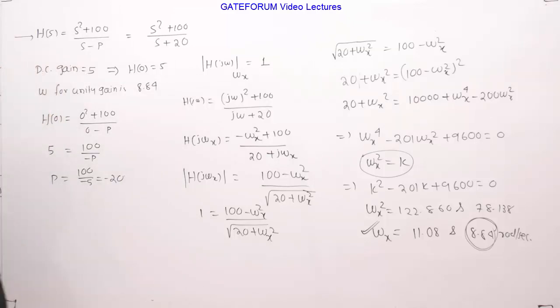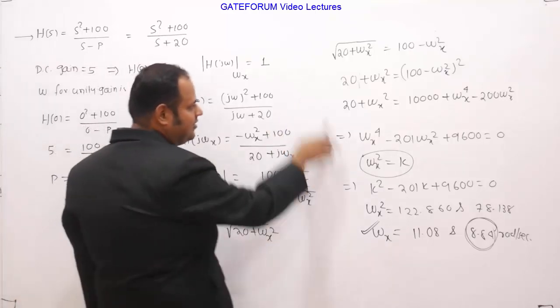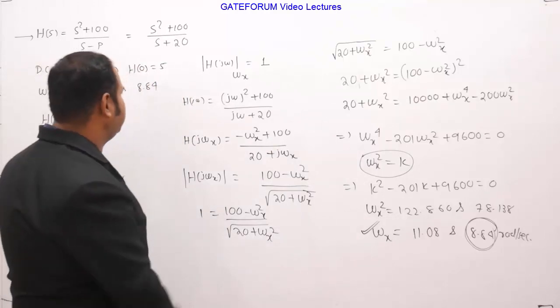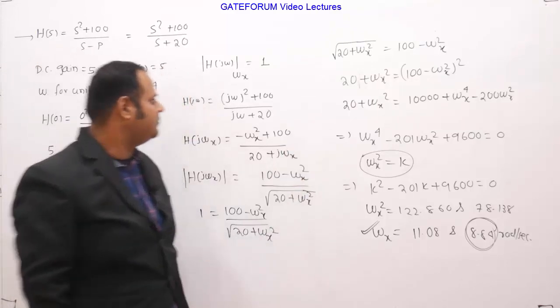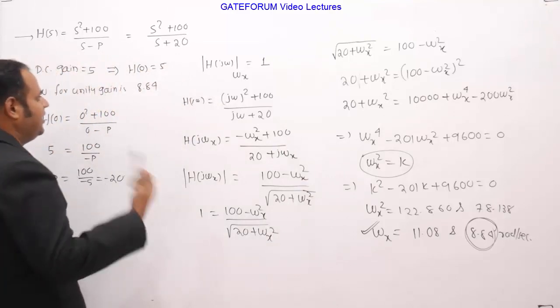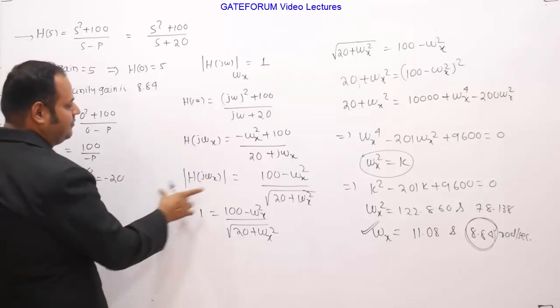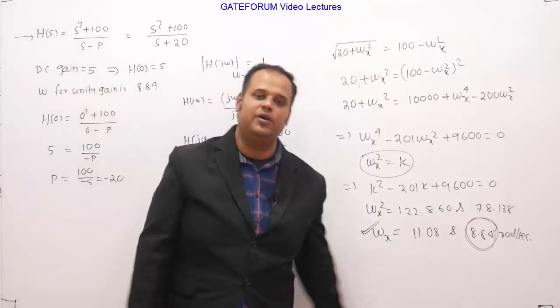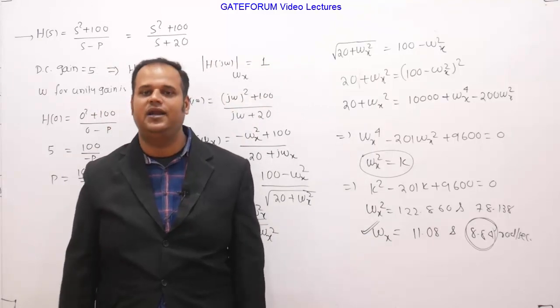So the summary of this problem is from the DC gain we got the p and we have substituted here. Then we have done the calculations. This part is little bit lengthy, it will take around 3-4 minutes of time, but conceptually there is nothing new or tough part involved in this question. This is very straightforward, just the calculations may take 2-3 minutes. Simply we have let at omega x the gain is unity, we have replaced the omega by omega x, then we have taken the magnitude. By simplifying this we are getting 11.08 and 8.84. As per the question the smallest frequency is 8.84, so 8.84 is the right answer for this question.